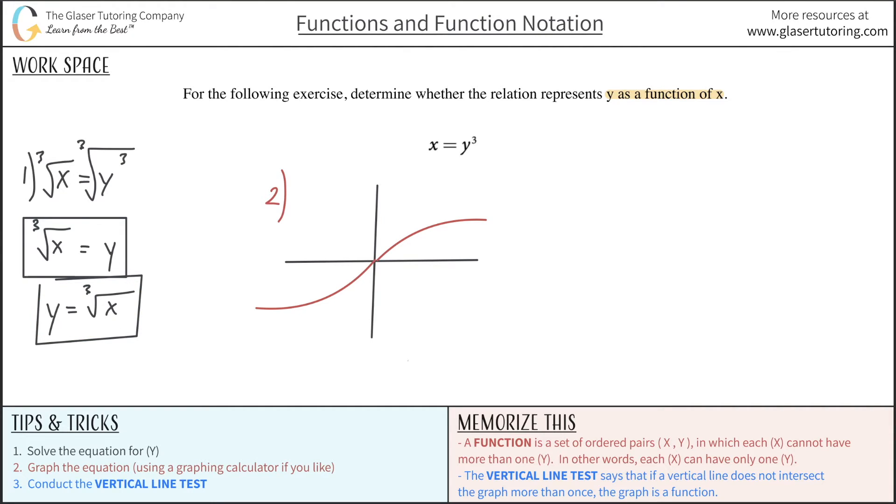Now, in order to determine whether this thing is a function or not, we now have to run it through the vertical line test. So let me just copy this graph on over here. And the vertical line test says that if a vertical line does not intersect the graph more than once, so if it intersects at zero or one times, then the graph is a function.